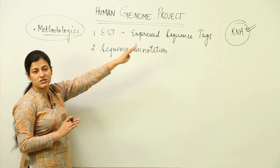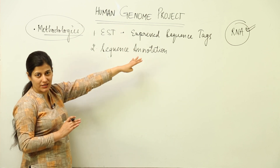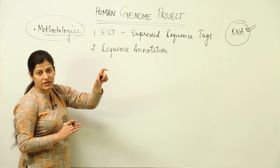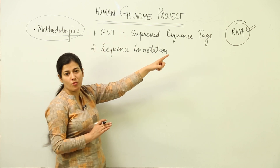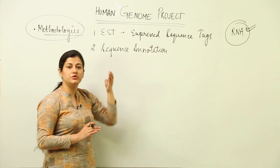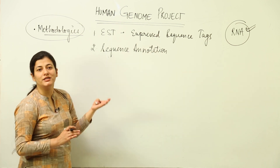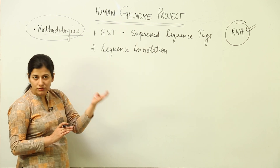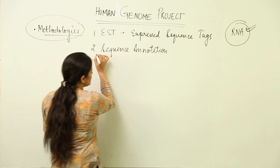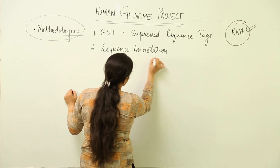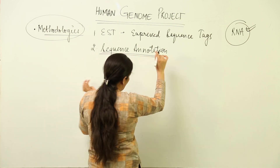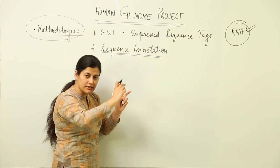In EST, you are targeting only those sequences of DNA which have expressed themselves in the form of RNA. You are going to use the RNA produced from the DNA, targeting only the genes expressing themselves as RNA. From that RNA it can be determined what the sequence of the genome is.